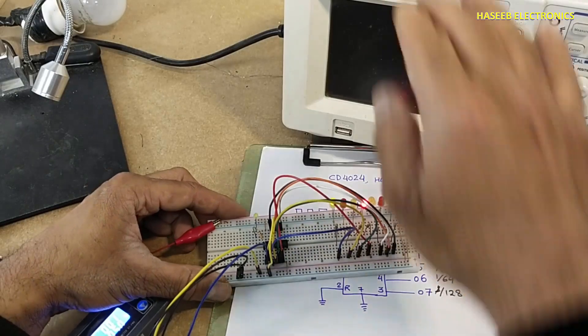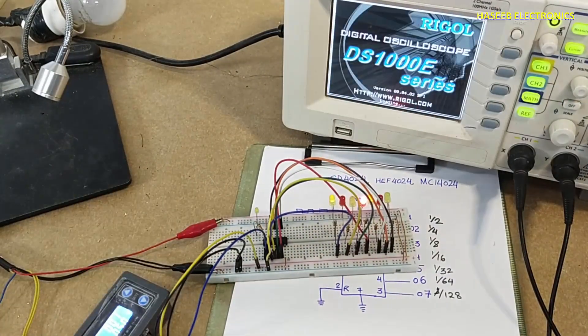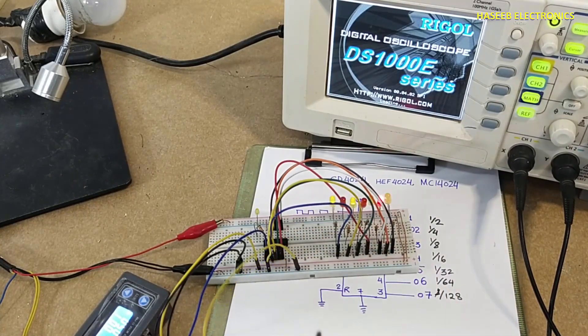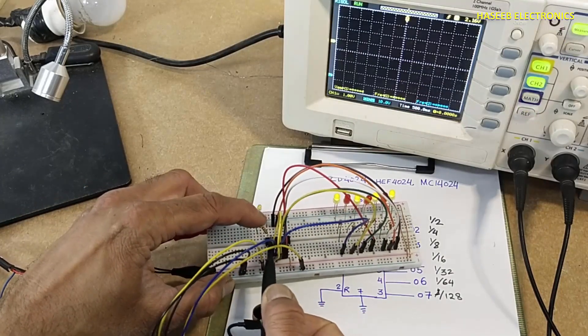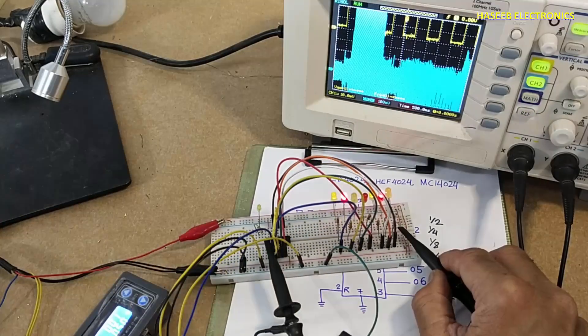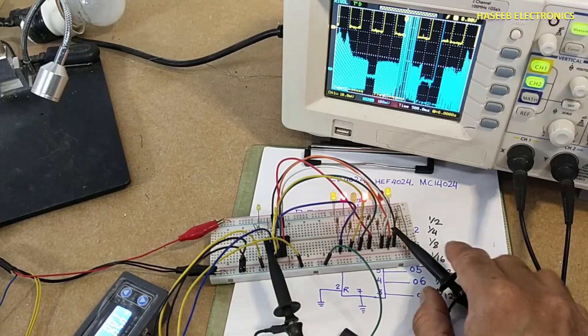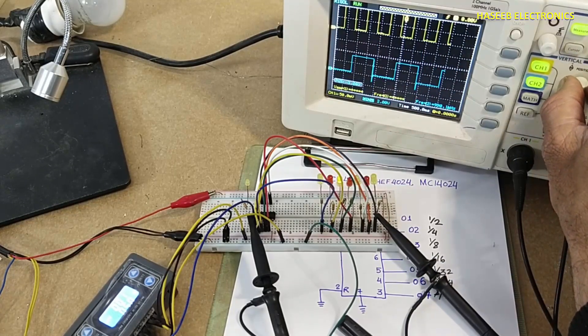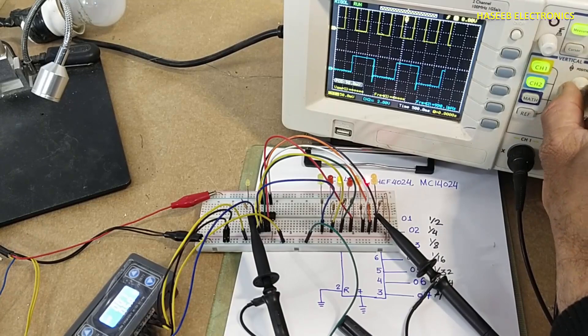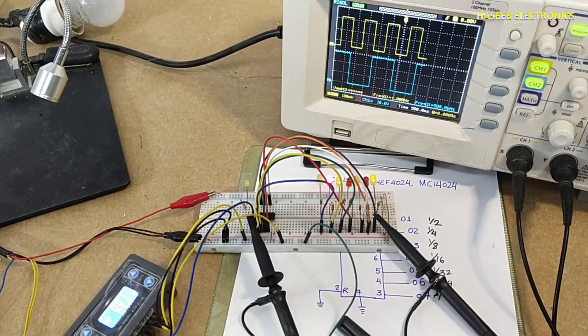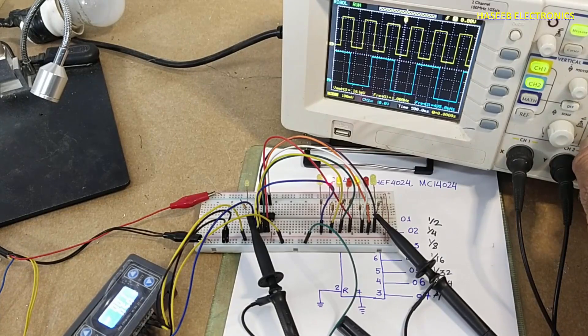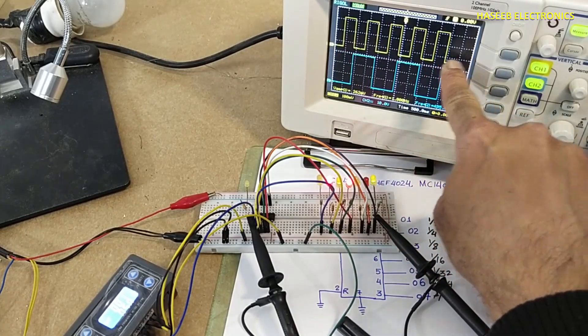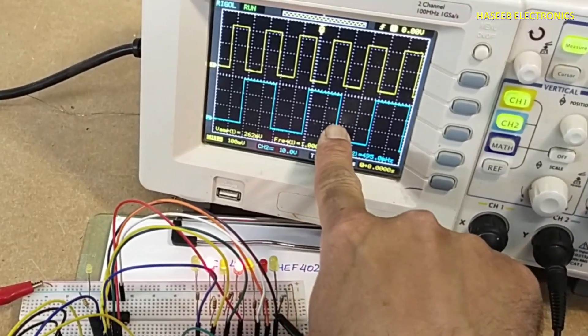Now we will check frequency on oscilloscope. DSO ground is connected to power ground, and I am connecting first channel to pin number 1. Channel 2 signal. Now we can see, in the top side, we have double frequency. And in the bottom, we have half frequency.